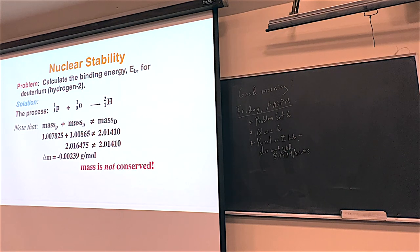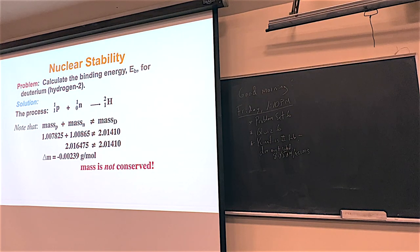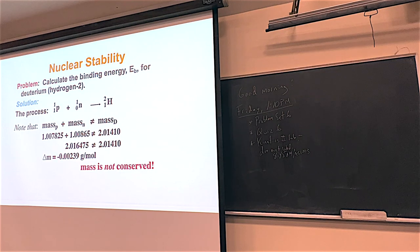In Chem 221 when we balanced equations, I made a big deal about conservation of mass. But here, mass is not conserved — the mass that goes in is not the same as the mass that comes out. This is a freaky concept for chemistry, because with atoms going in and atoms coming out — Lavoisier, law of conservation of mass — we're going to see there's a little bit more to it. The change in mass, delta being final minus initial, is a negative number. We've lost mass upon making deuterium.